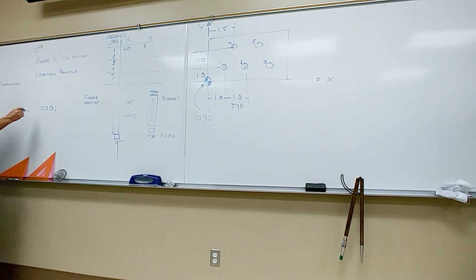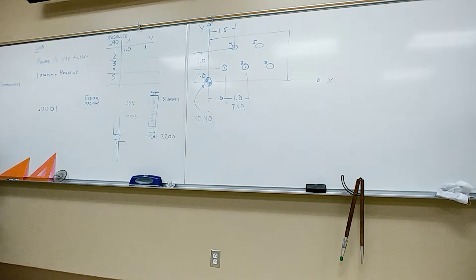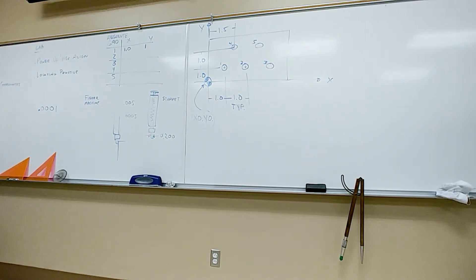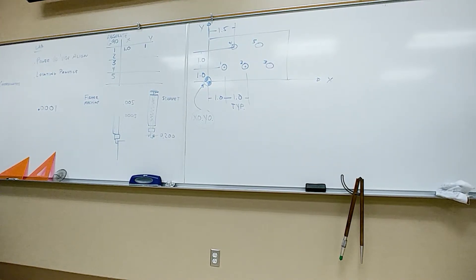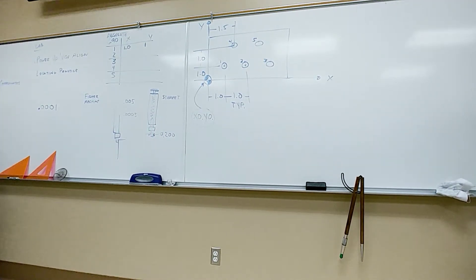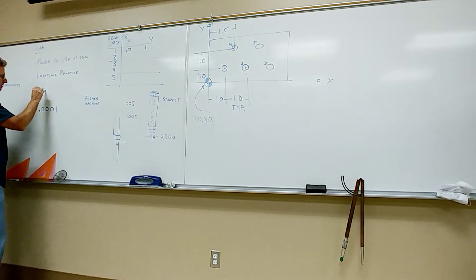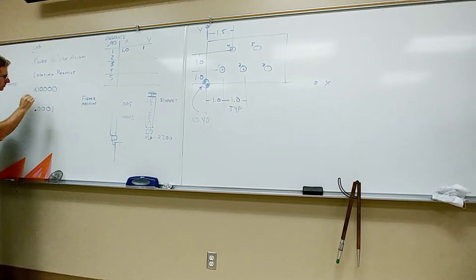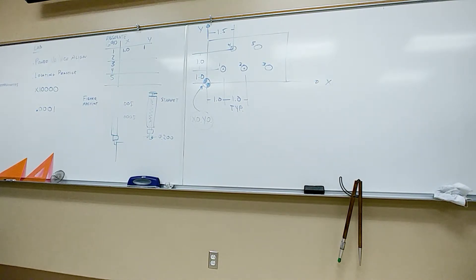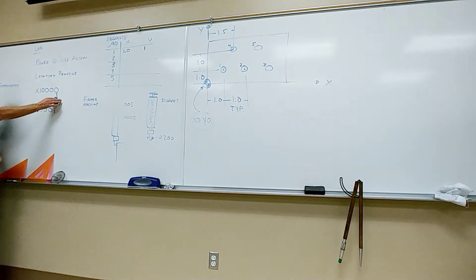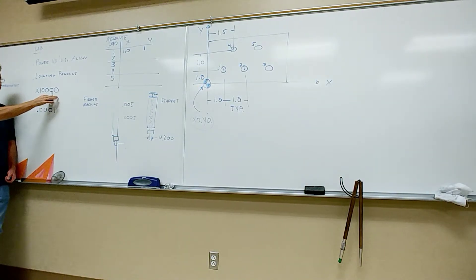This goes back to the day of NC programming systems. They used to be all incremental many years ago, a long time ago. But CNC controls, up until about the mid-70s, a lot of the controls did not accept decimal values in the program. So if you wanted to program an x position of one inch, this is what it looked like. That was x of one inch. Ten thousand and ten thousand. You always got to count them like tens placed, tens, thousands, ten thousandths, hundred thousandths, there's your one inch.